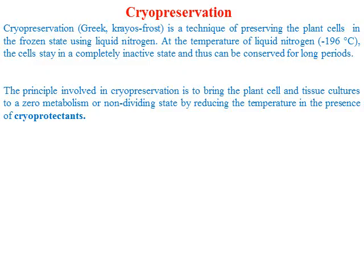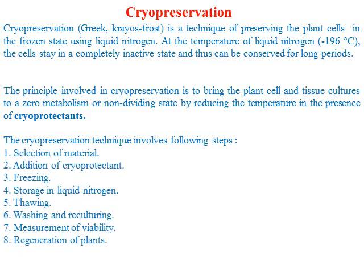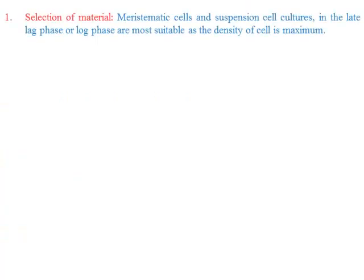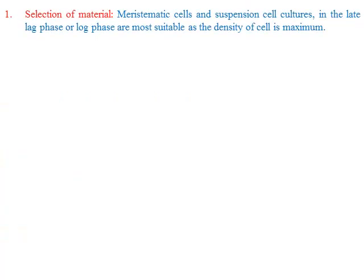We will discuss cryoprotectants in the next slide. The steps of cryopreservation are: there are eight procedures. The first step is selection of material. Generally, we use meristematic or suspension cell culture. This is because the density of meristematic cells is maximum, and when the density of cells is maximum, preservation of germplasm is very good. Furthermore, the viability of the cell is maximum.